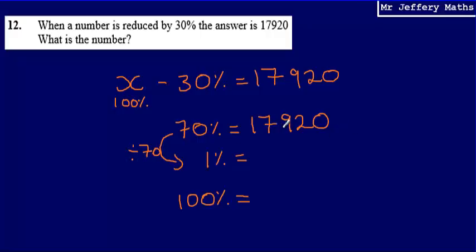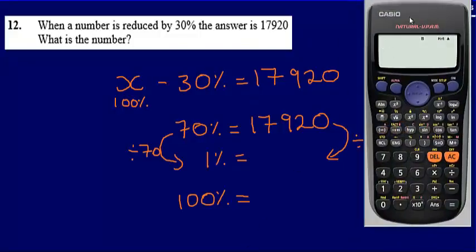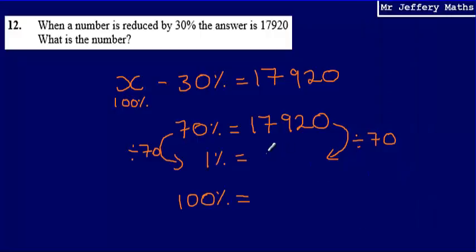And so that means that I'm going to take my amount 17,920 and divide it by 70. So using a calculator I've got 17,920 divided by 70 and that gives me 256, so that means that 1% is 256.